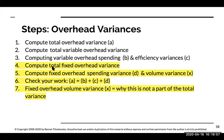First, we're going to compute the total fixed overhead variance. Then we'll compute the fixed overhead spending variance and volume variance, and then check our work. The volume variance does not really have anything to do with what we actually paid for overhead — rather, it's the difference between how much overhead we applied versus what we actually had budgeted.